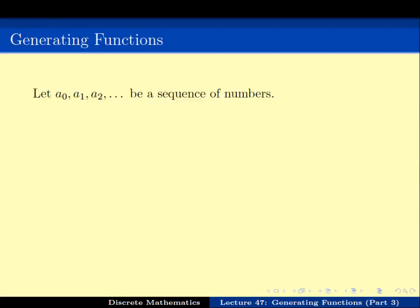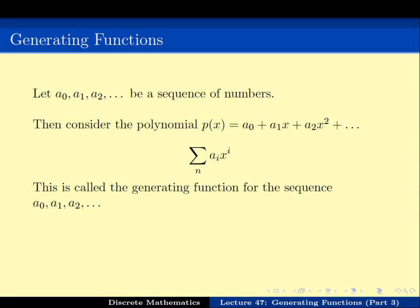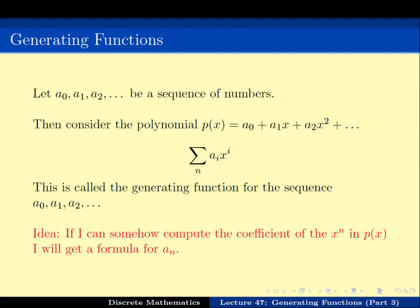The approach we have been looking at for the last three videos is generating functions. To quickly recap: if we have a sequence a0, a1, a2, ..., the generating function is defined as the power series a0 + a1·x + a2·x² + ..., which is the summation of aₙ·xⁿ. This is called the generating function for the sequence. The idea is that if we can compute the coefficients of xⁿ, we can get the formula for aₙ.